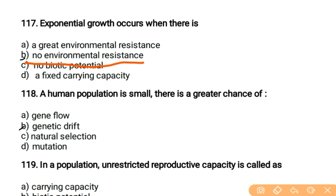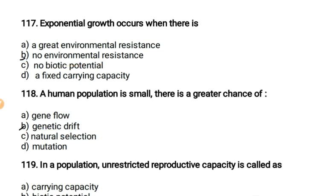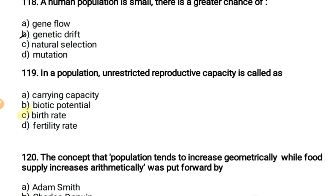If a human population is small, there is a great chance of genetic drift. In a population, unrestricted reproductive capacity is called birth rate.